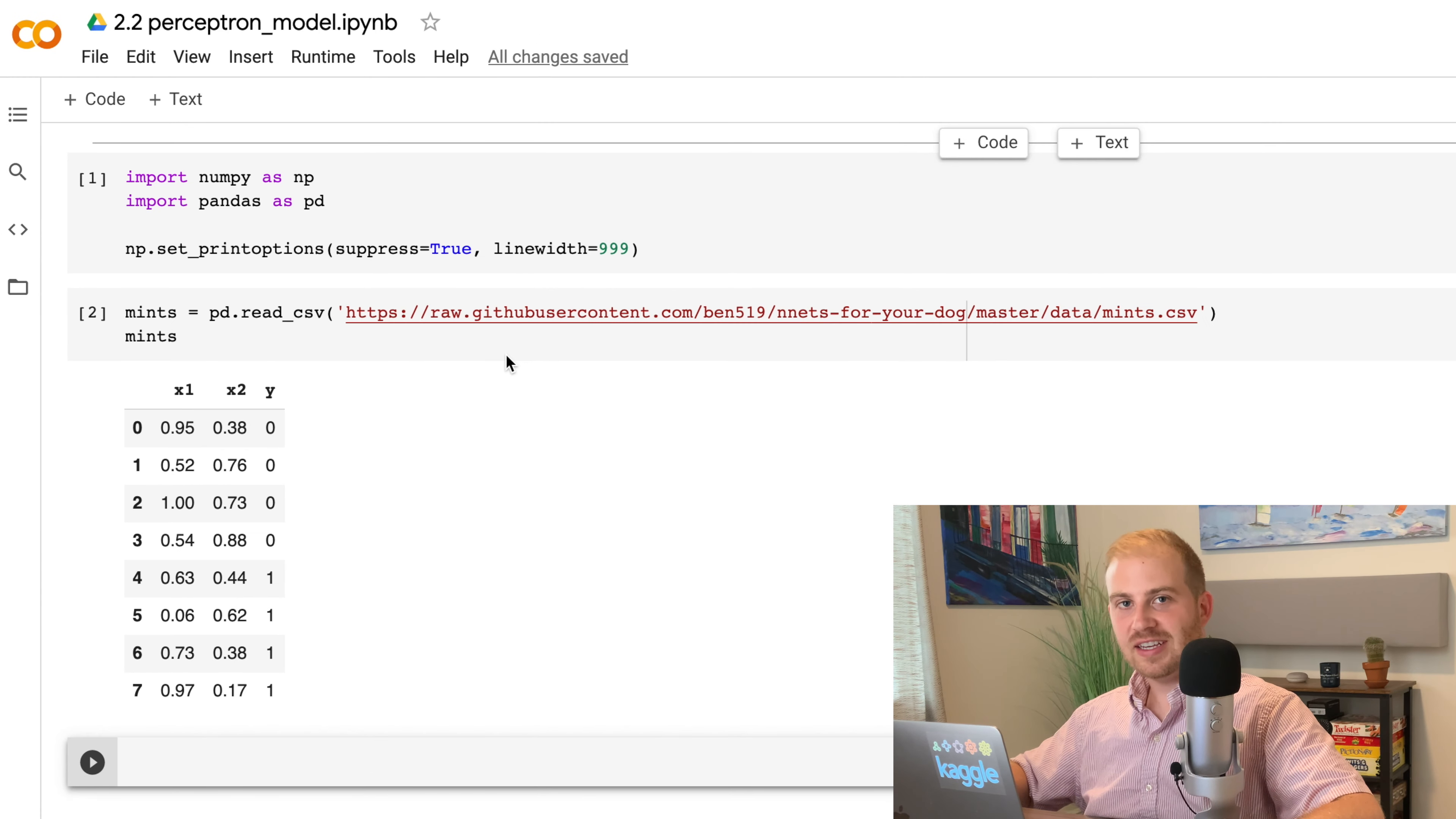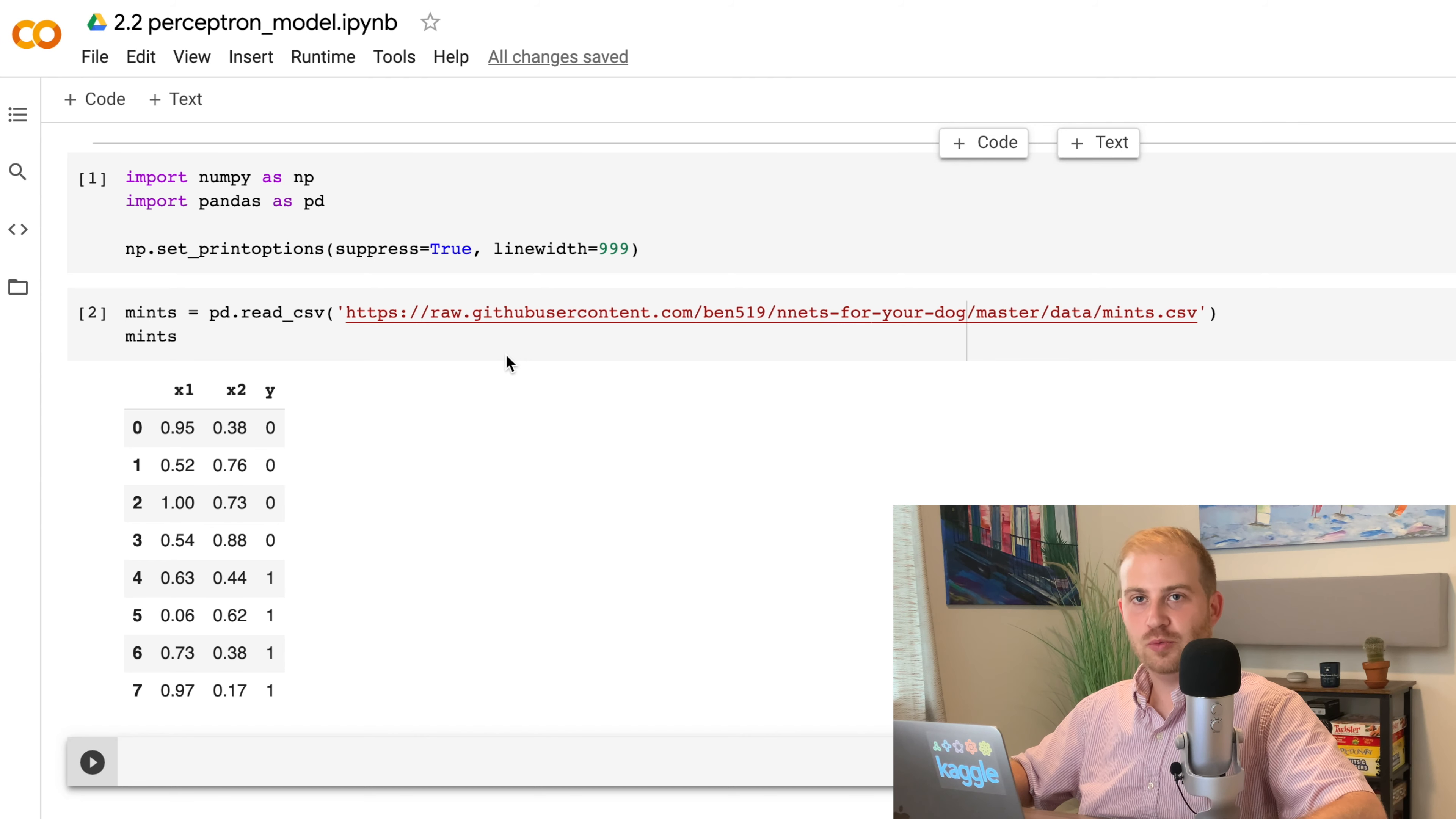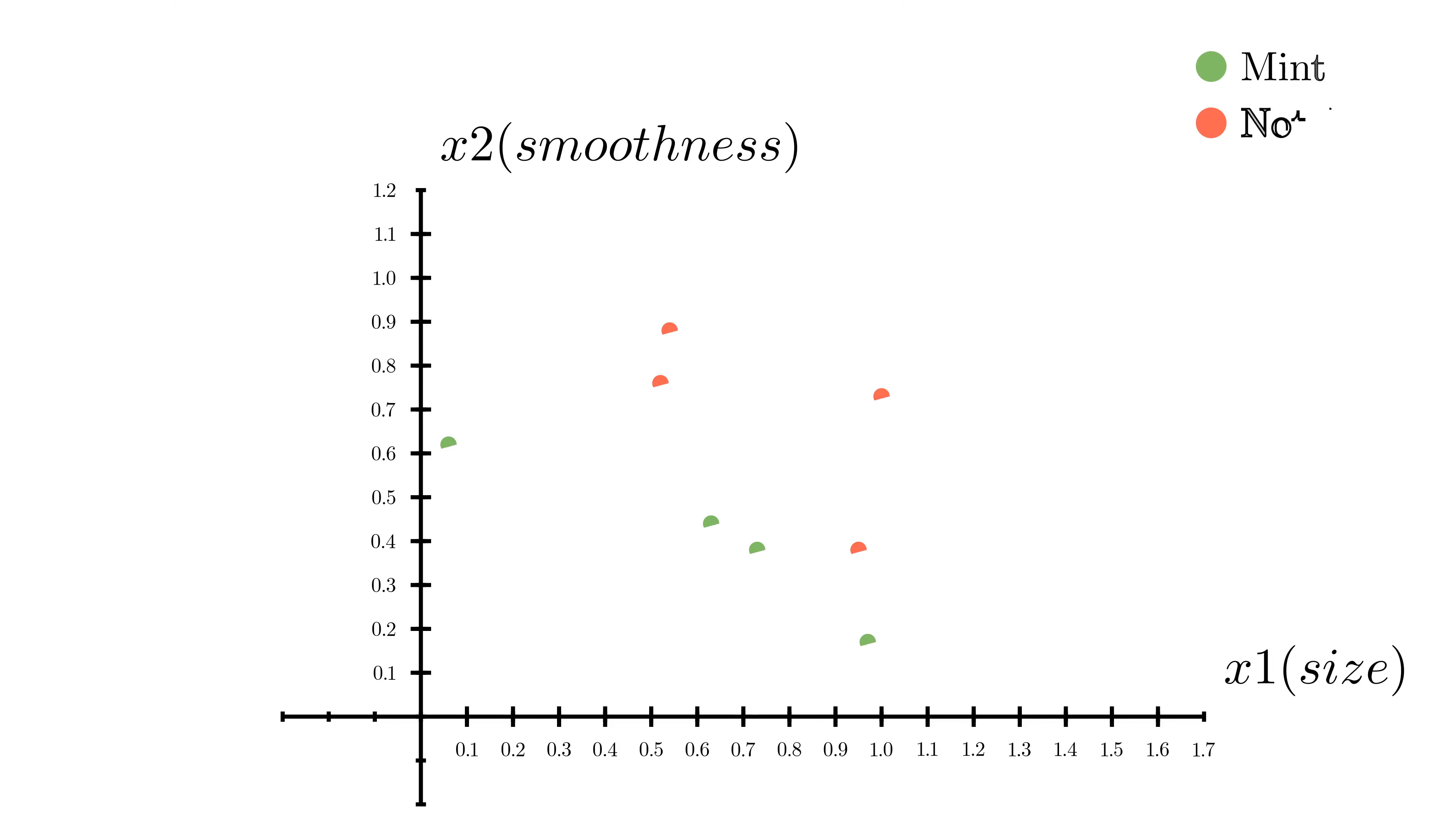The MINTS dataset represents eight objects in my pocket, with real-valued features x1 and x2, which you can imagine as the size and smoothness of each object, and a binary target y, indicating whether each object is a mint. When I reach into my pocket and touch an object, I want a model to predict whether or not it's a mint. If we plot the MINTS dataset on a coordinate plane colored by the target, it looks like this.